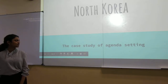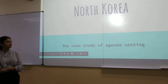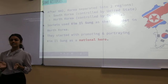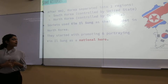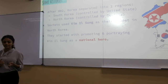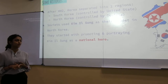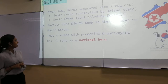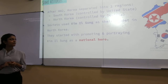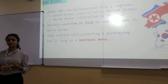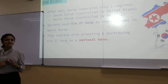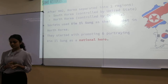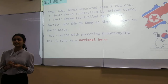Our case study is about North Korea. After World War II, Korea was separated into two regions: South Korea and North Korea. Both seemed independent, but South Korea was under the control of the US and North Korea was under the control of the Soviet Union. The Soviet Union used Kim Il-sung as their puppet in North Korea to control the country, made him the leader, and promoted and portrayed him as a national king.